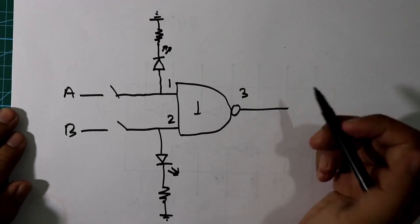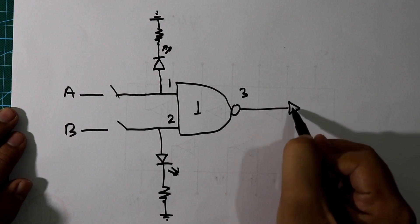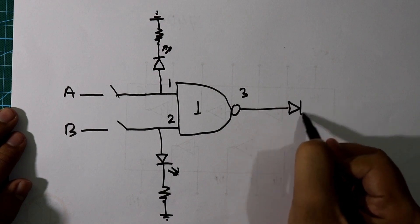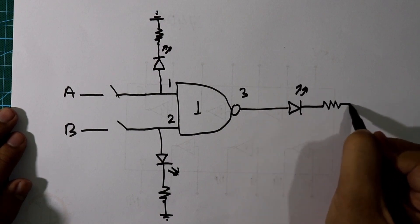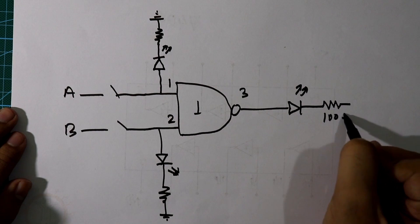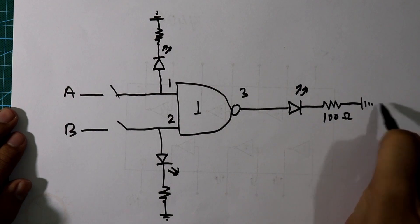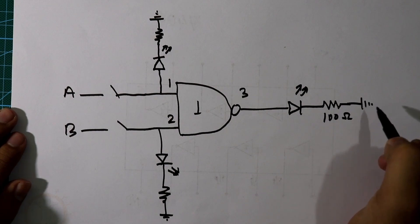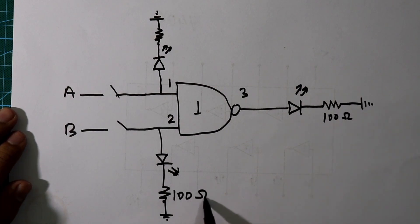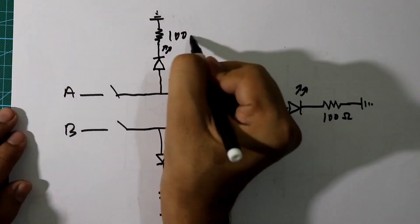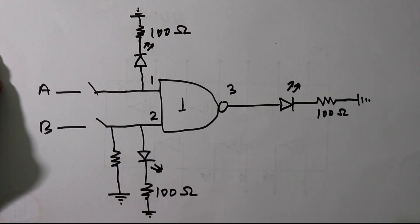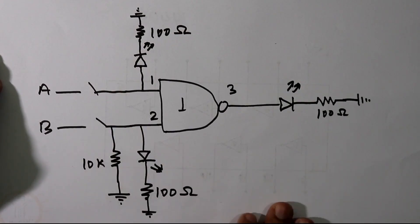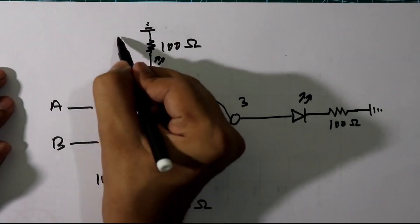With the output we connect one output LED, then a 100 ohm resistor to ground. A pull-down resistor of 10k ohm is also used for the inputs.